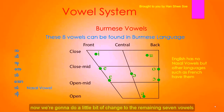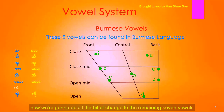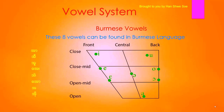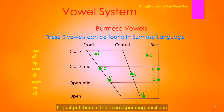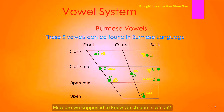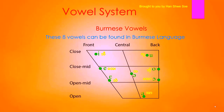Now we're going to do a little bit of change to the remaining seven vowels, and add one extra. Now we have eight vowels. I'll just put them in the corresponding positions. It's time to explain them.